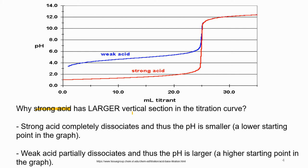Why does a strong acid have a larger vertical section in the titration curve? Simply because strong acid completely dissociates, so the pH is smaller — meaning a lower starting point on the graph. However, weak acid partially dissociates, so the pH is larger and the starting point is higher. Therefore, the vertical section is larger for strong acid and shorter for weak acid.